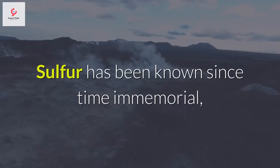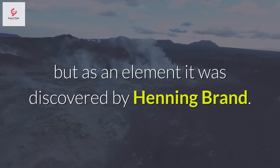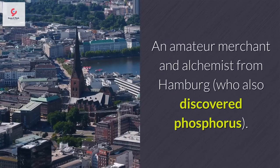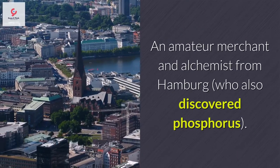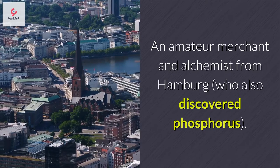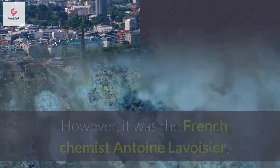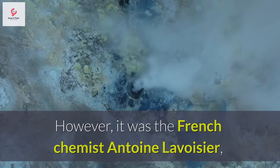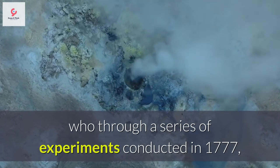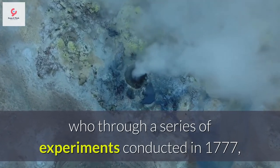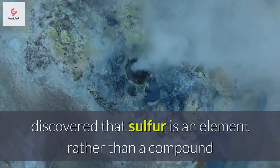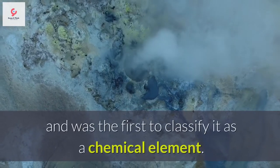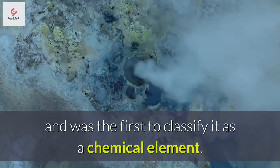Sulfur has been known since time immemorial, but as an element it was discovered by Henning Brand, an amateur merchant and alchemist from Hamburg, who also discovered phosphorus. However, it was the French chemist Antoine Lavoisier who, through a series of experiments conducted in 1777, discovered that sulfur is an element rather than a compound and was the first to classify it as a chemical element.